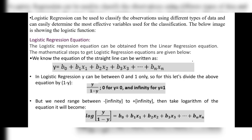Logistic regression can be used to classify observations using different types of data and can easily determine the most effective variable used for classification. The logistic equation is: y = b0 + b1x1 + b2x2 + b3x3 + ... + bnxn. This equation is obtained from the linear regression equation. In logistic regression, y can be between 0 and 1 only.